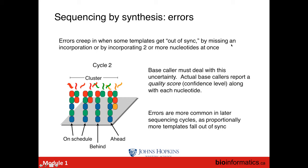Another important thing about Illumina sequencing is that the error rate is not uniform — it's dependent on where in the DNA fragment the base is. At the very start of the read, there's not a lot of opportunity for fragments to jump ahead or fall behind, so the error rate tends to be lower at the beginning. But as you go from the five prime to the three prime end, the error rate increases as molecules can fall further and further behind, and the signal becomes less pure. So the error rate increases towards the end of the read.